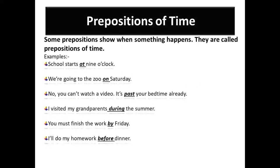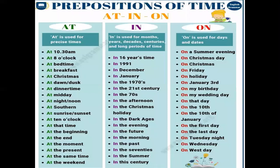When talking about prepositions of time, 'at' is used for a precise or definite point of time. For example: 'I get up at 5 o'clock,' 'he sleeps at midnight,' 'it is very hot at noon.' Here, at noon, at midnight, and at 5 o'clock are definite points of time — they cannot change.